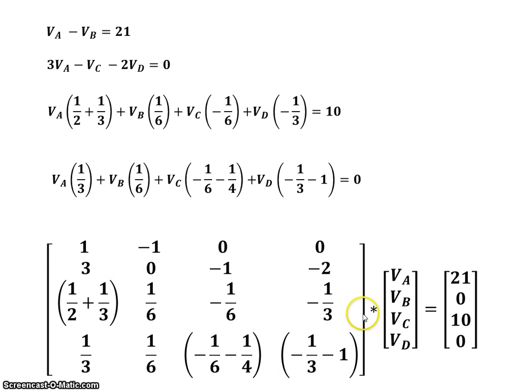So now, using these four equations, let's write them down in a matrix format like this. So the matrix basically has all the coefficients of VA here, VB here, VC here, and VD here. So if I was to do matrix multiplication, I have VA times 1, VB times minus 1, VC times 0, VD times 0 is equal to 21, and so forth.